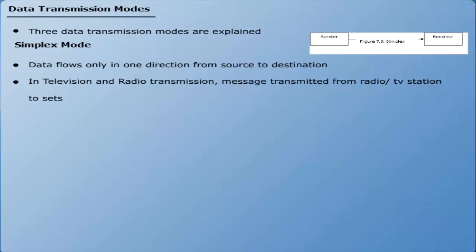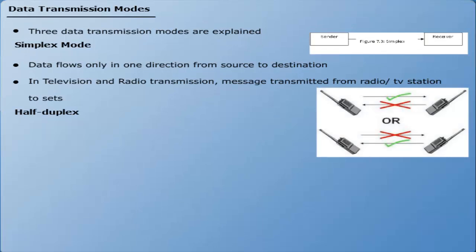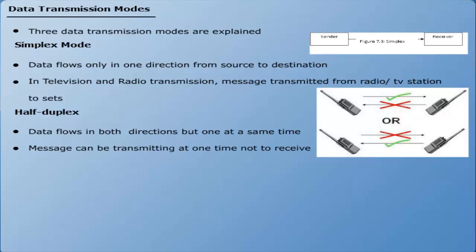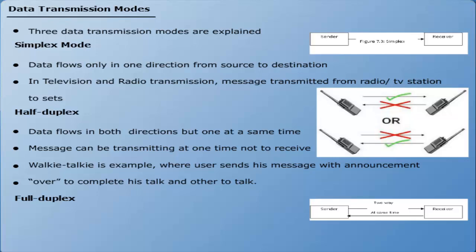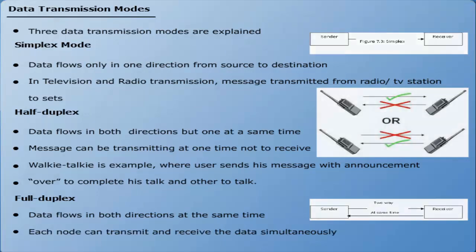In half duplex, data flows in both directions but only one at a time. A message can be transmitted but not received simultaneously. A walkie-talkie is an example of half duplex, where a user ends transmission with 'over' to prevent overlap. In full duplex, data flows in both directions at the same time — each node can transmit and receive data simultaneously. Telephones are common examples of full duplex devices, allowing both users to hear and talk at the same time.